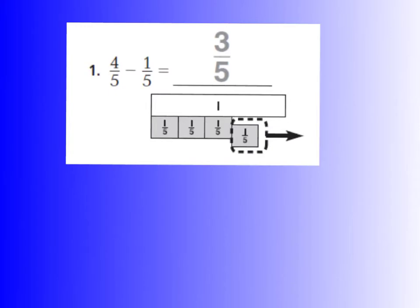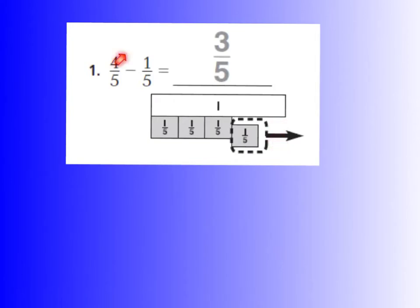For question number one, you can see that this whole is cut into five equal parts: one-fifth, two-fifths, three-fifths, four-fifths, and five-fifths, which equals one whole. However, as you can see, we're starting with four-fifths.